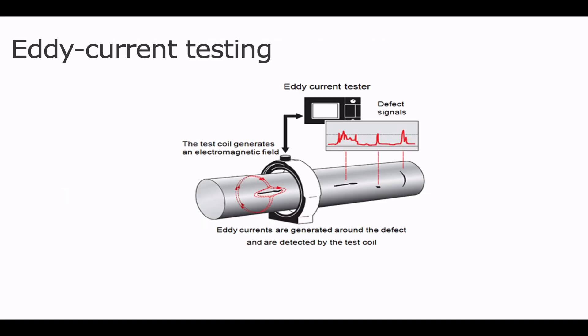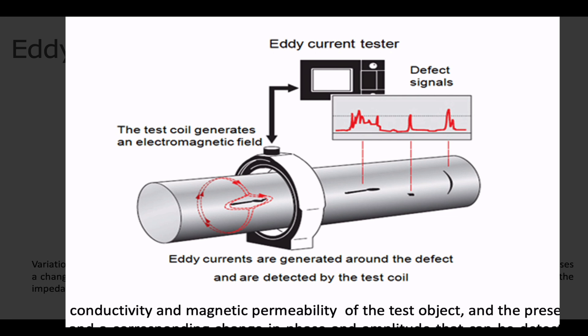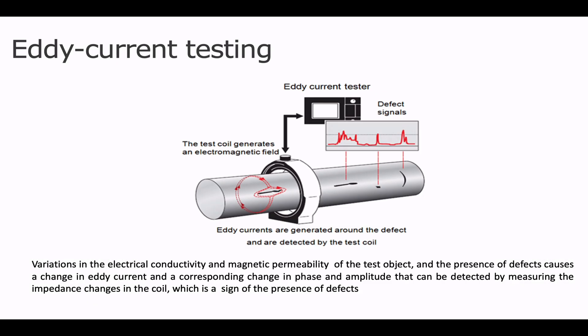Eddy current test is based on the physics phenomenon of electromagnetic induction. In an eddy current probe, an alternating current flows through the wire coil and generates an oscillating magnetic field. If the probe and its magnetic field are brought close to a conductive material like a metal test piece, a circular flow of electrons known as eddy current will begin to move through the metal, like swirling water in a stream. That eddy current flowing through the metal will in turn generate its own magnetic field which will interact with the coil and its field through mutual inductance.